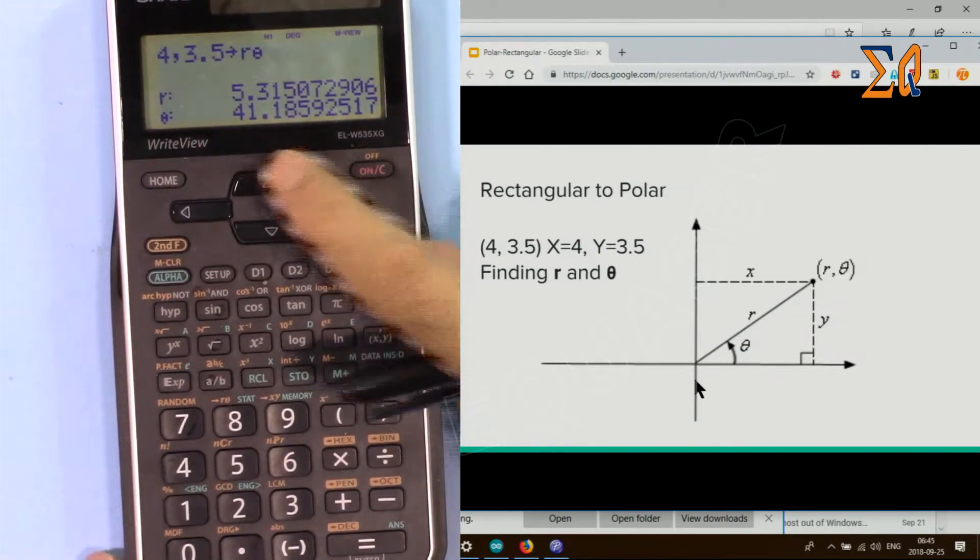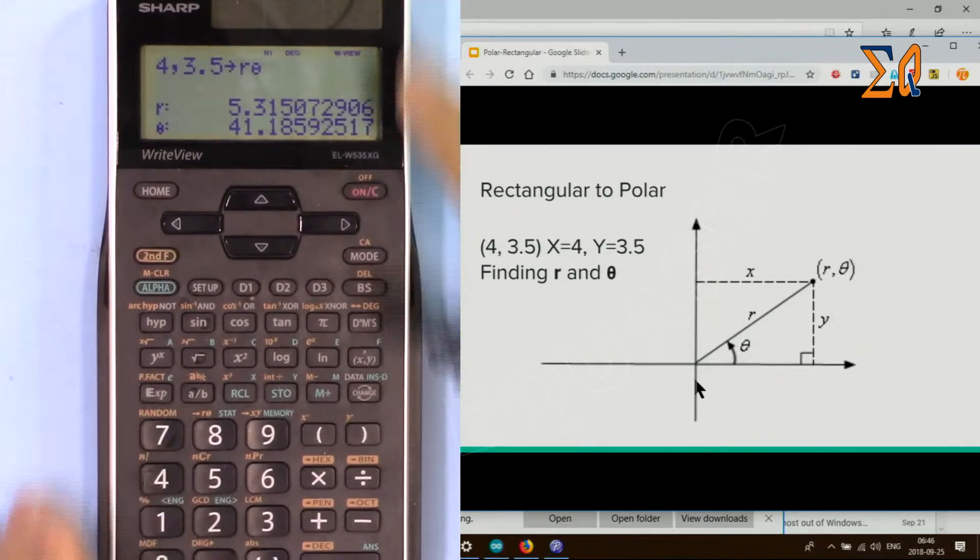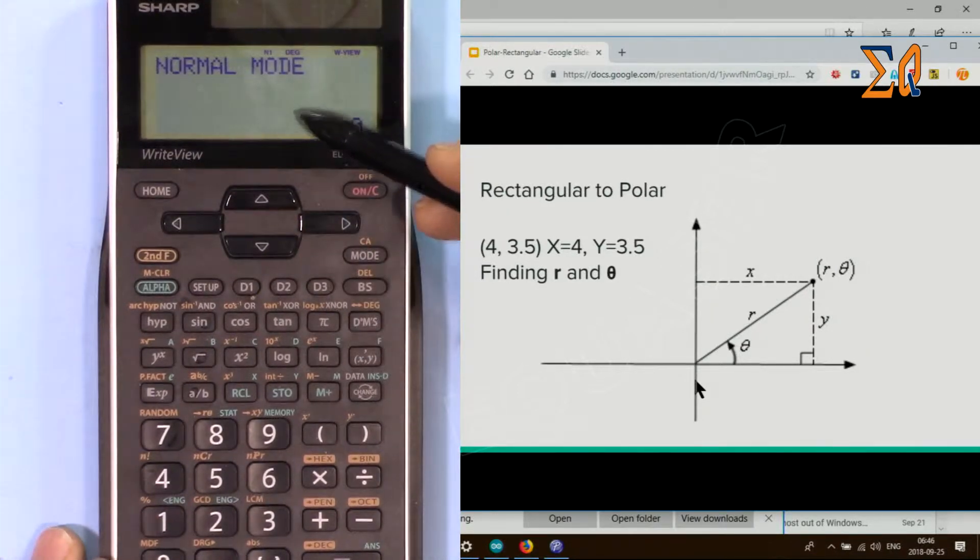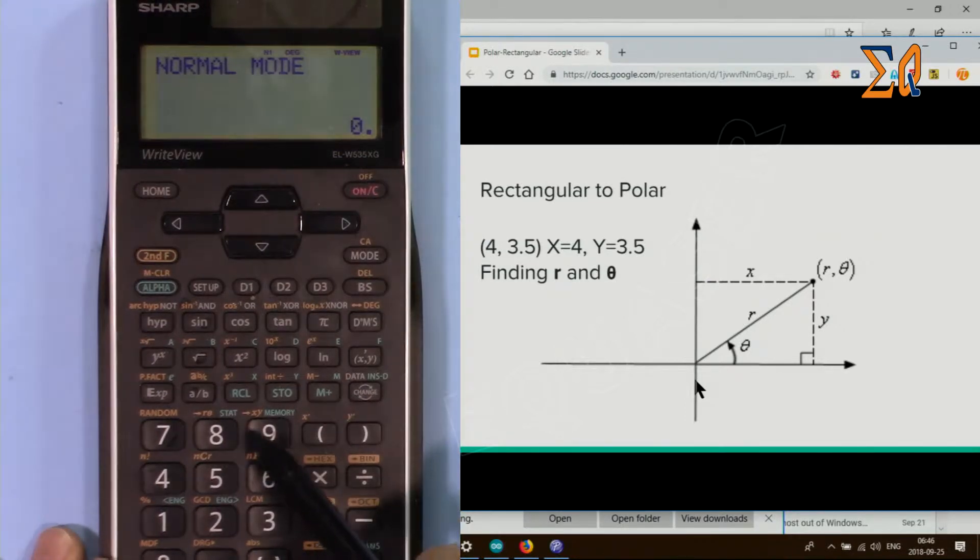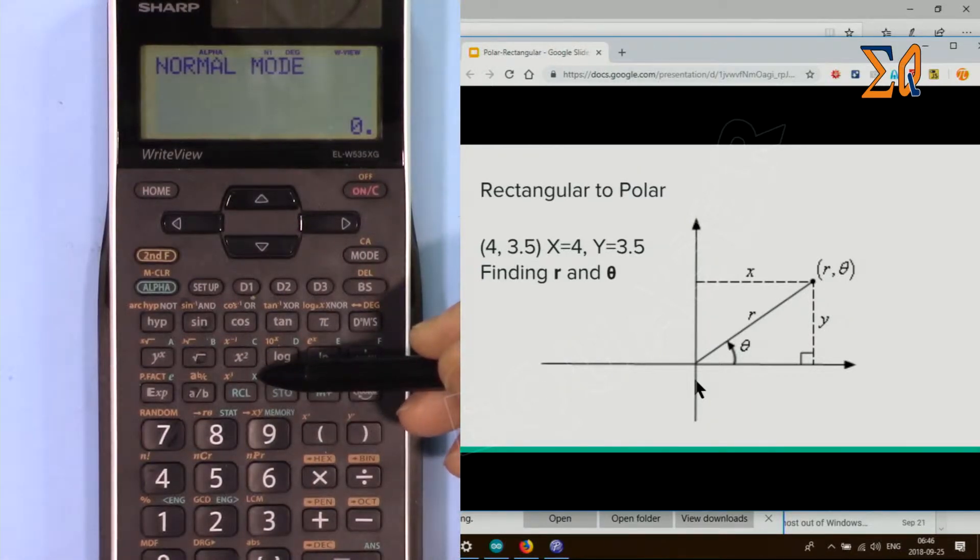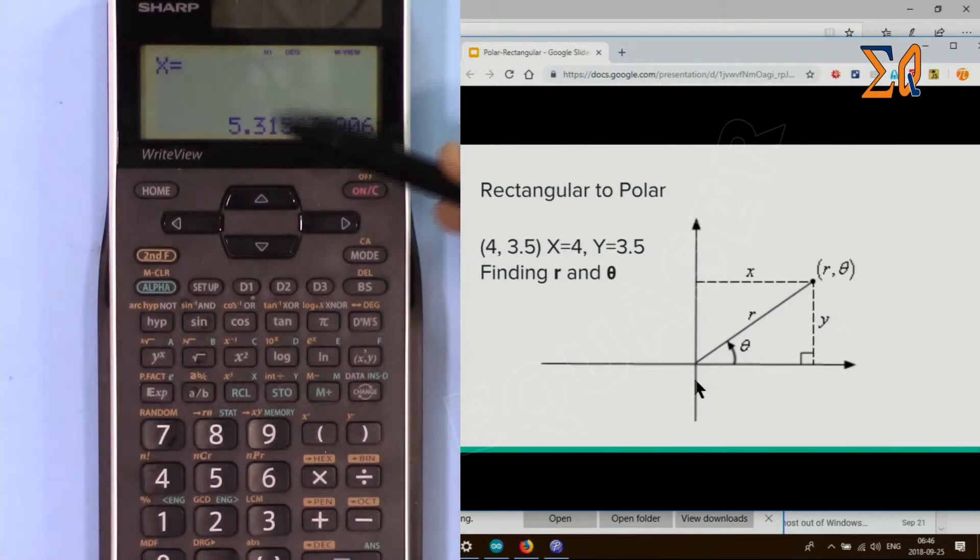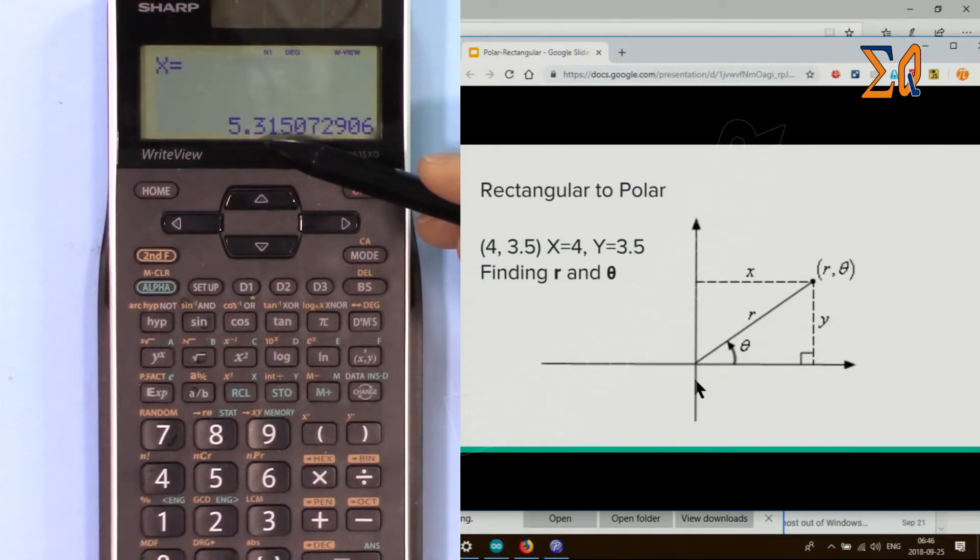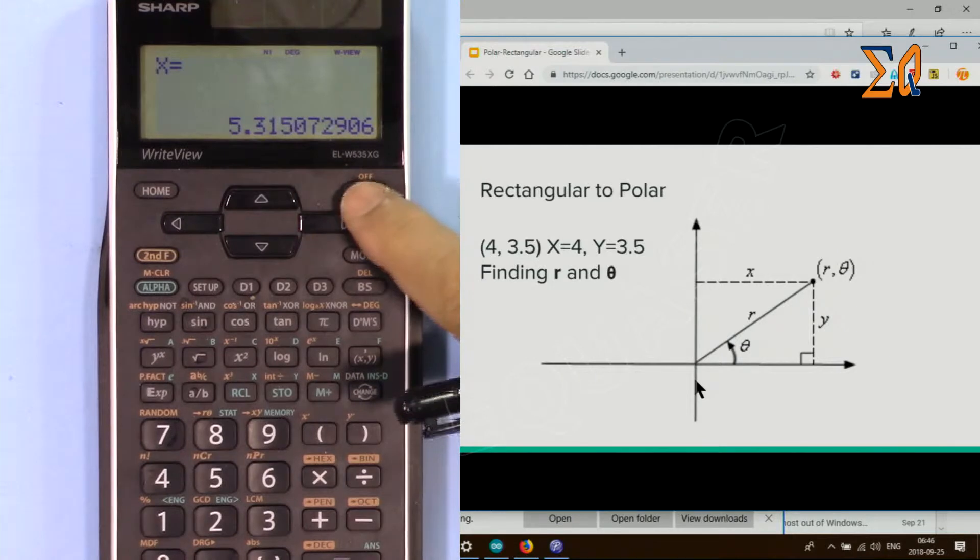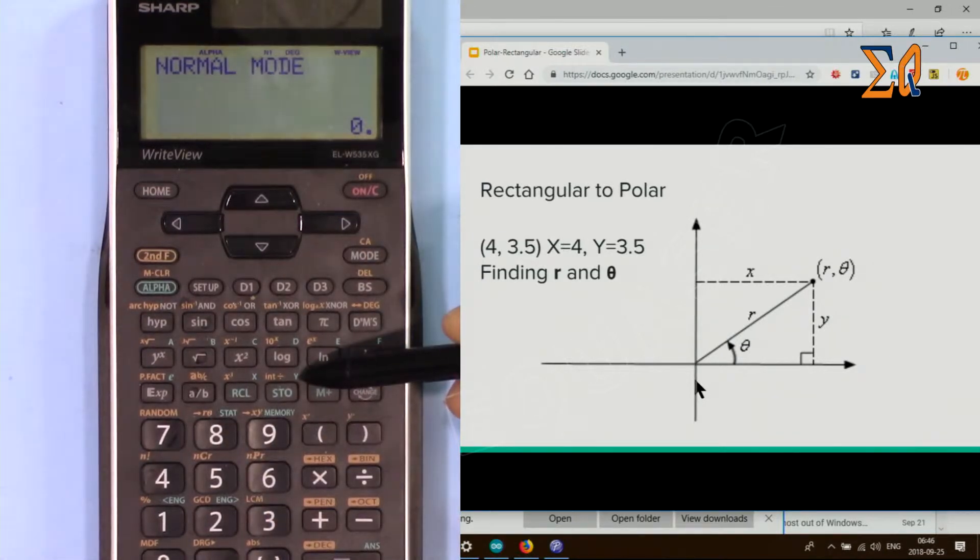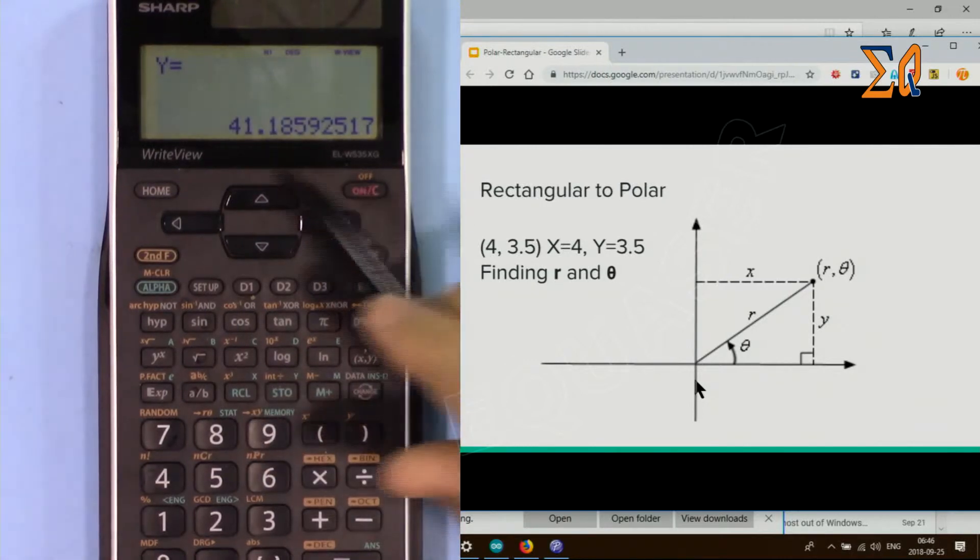When you do the calculation or conversion, one thing that happens is the values you convert will be stored in memory X and Y. Just use Recall and then X - it gives us 5.3. Then Recall and Y - this gives 41.1, which was the angle.